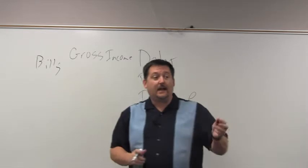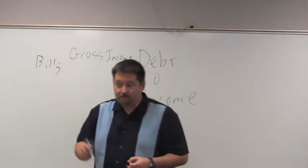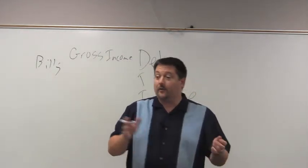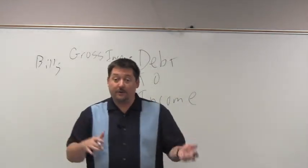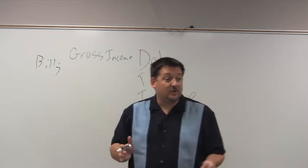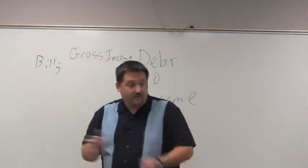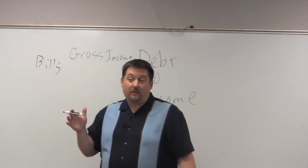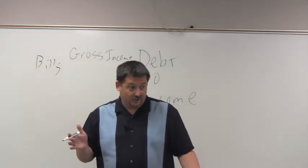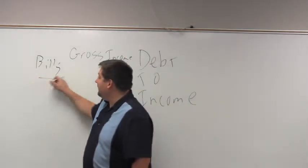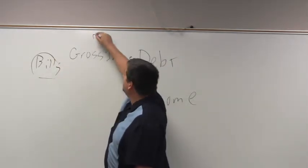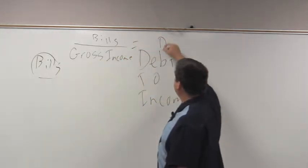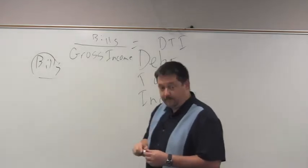Now, if you have a credit card that has a zero balance, today's marketplace is probably going to count a minimum payment against you anyway. I know that if you have a home equity line on a property, like a second lien, they're going to count that against you anyway — like you owe it to the max. So if you have a $100,000 home equity line but you don't owe anything on it, they're actually going to max it out and count the terms against you. So once you get all your bills added up, you take that number divided by your gross income — this equals your debt-to-income ratio.